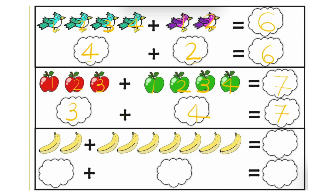Now next one. How many bananas are there? 1, 2. Left side there are 2 bananas. And right side: 1, 2, 3, 4, 5, 6 and 7. Now let's count how many bananas there are all together. So 1, 2, 3, 4, 5, 6, 7, 8 and 9. So there are 9 bananas. So we can say 2 plus 7 is equal to 9.